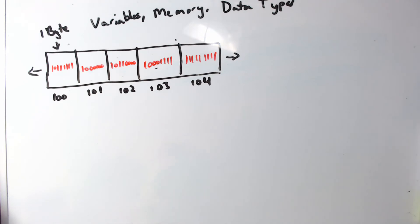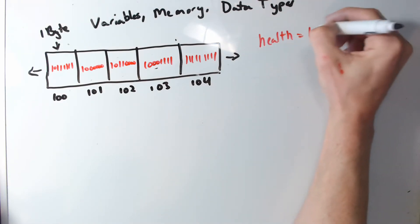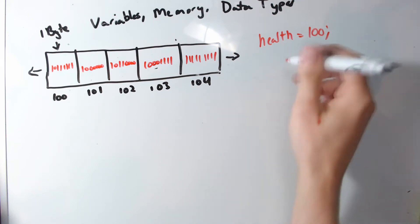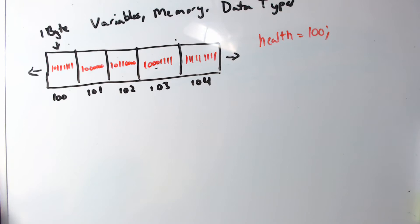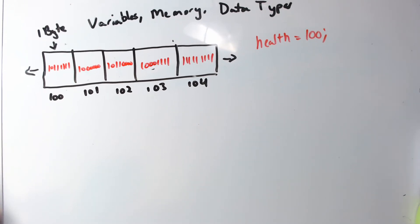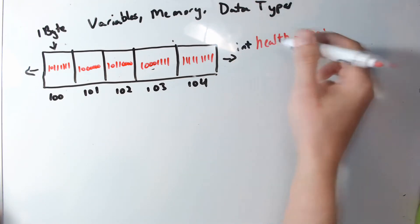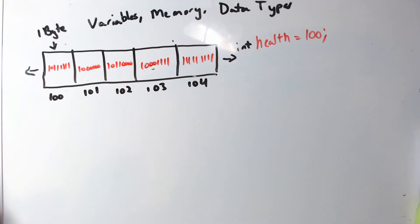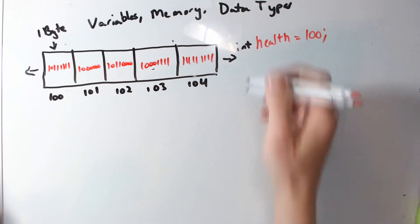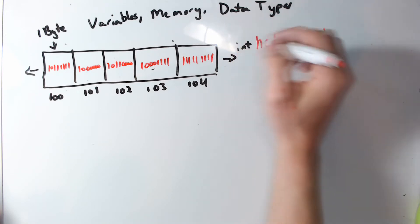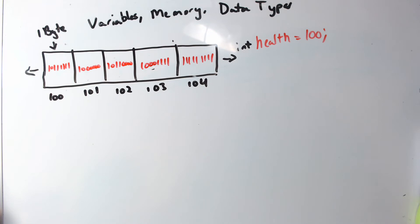Now we have these individual boxes — how do we store data inside them? There are things called data types, and we have primitive data types. In Game Maker, the memory stuff is handled automatically; you just assign a variable like health equals 100. But under the surface, in something like Java or C++, you'd have to write int health equals 100. This says: locate enough space for an integer and set that space to represent the number 100.